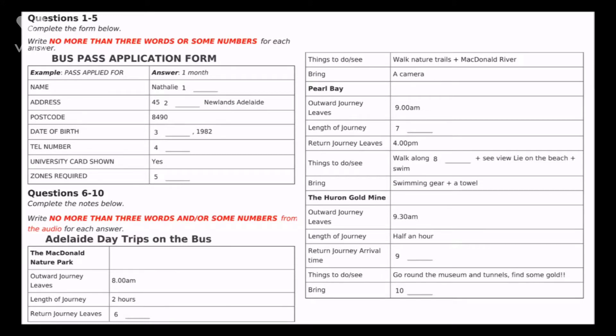Then there's the Pearl Bay trip. The bus leaves at 9 a.m. and goes up the coast to Pearl Bay. How far is that? It's an hour away. Once there, you can walk along the cliffs up to Rocky Point, which has a famous view up the coast. Or you can just lie on the beach and swim. Don't forget to take your swimming gear and a towel. The water's pretty safe there, and there are always lifeguards. The bus arrives back in Adelaide at 5 p.m. Hmm, that sounds nice. What else?